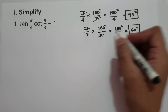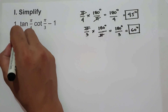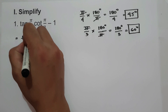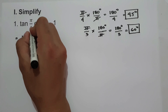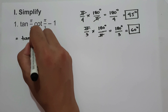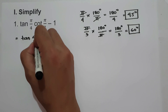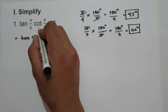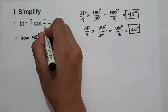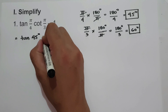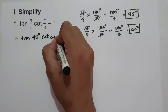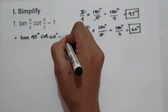And let us substitute this into the given expression. So we have tangent pi over 4, that is 45 degrees, and cotangent pi over 3, that is cotangent 60 degrees minus 1.